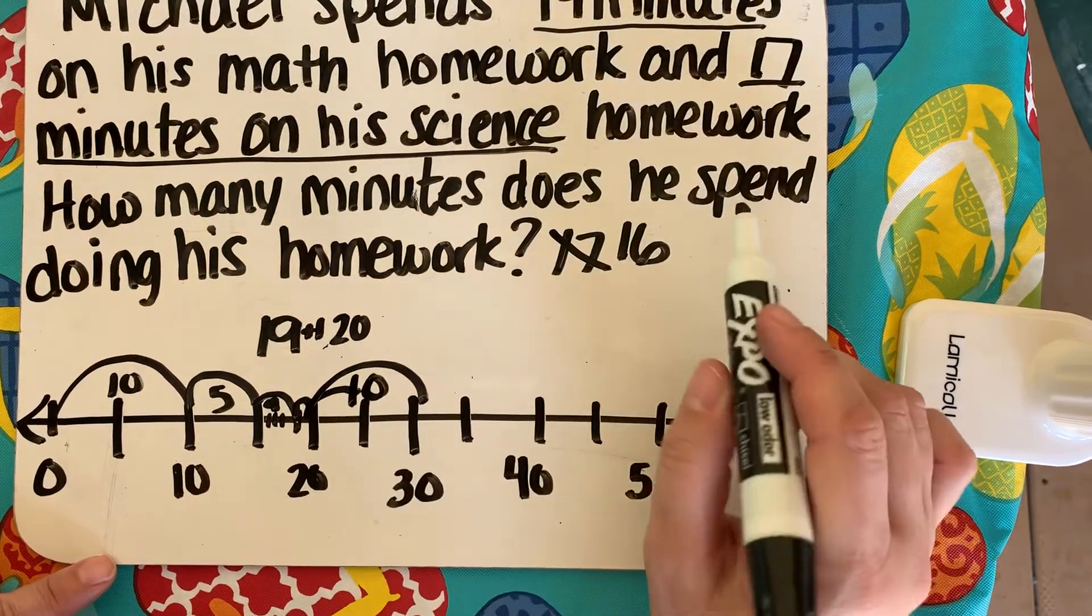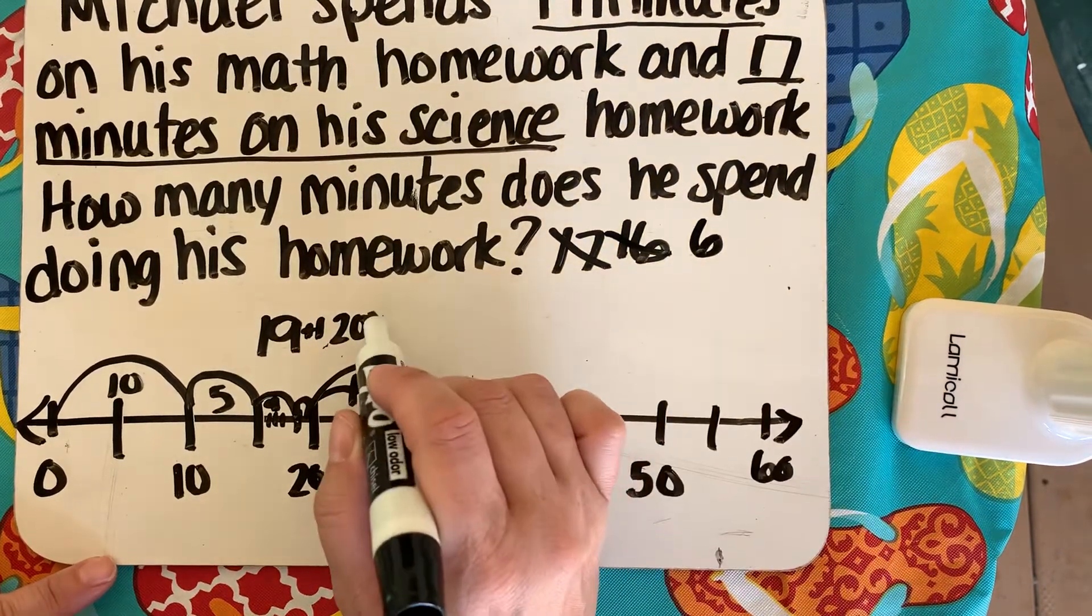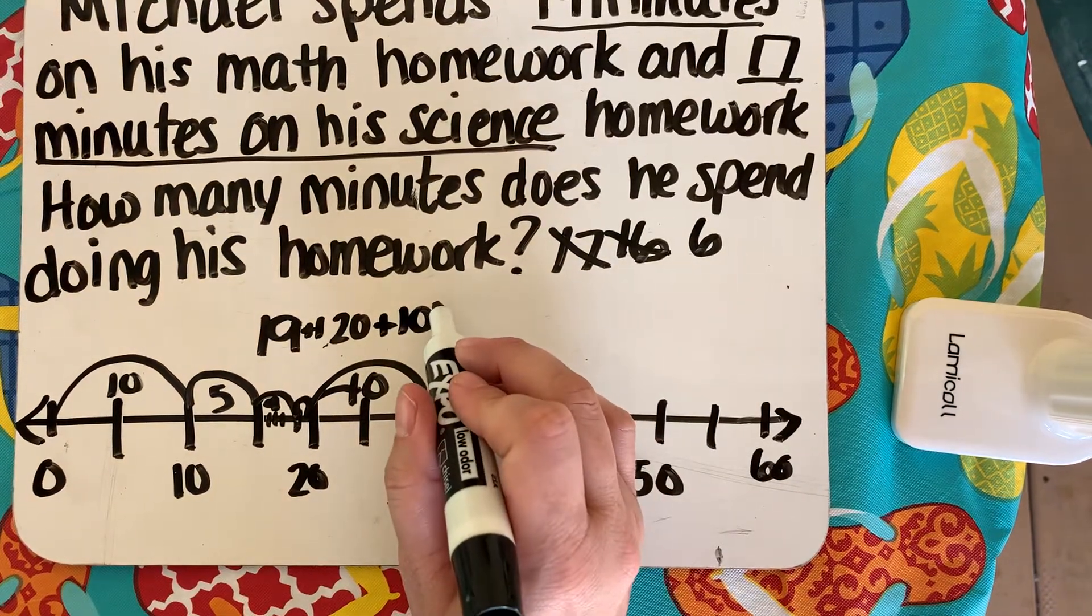So to cross that out and make that a 6. So that's 20 plus 10. That would equal 30. We're at 30 minutes.